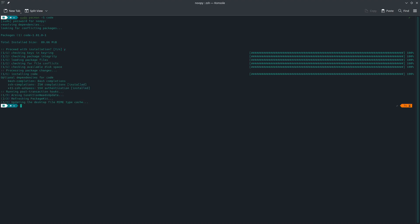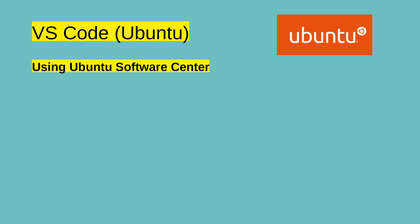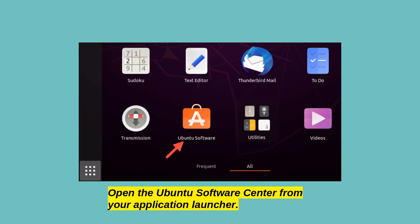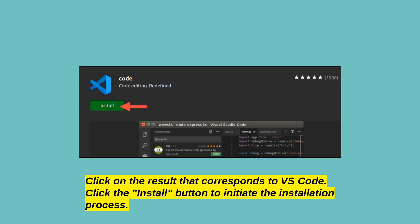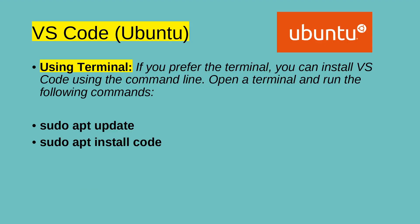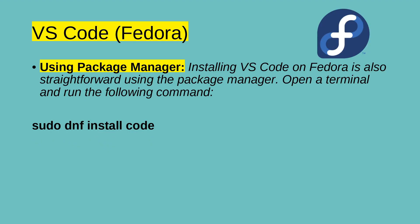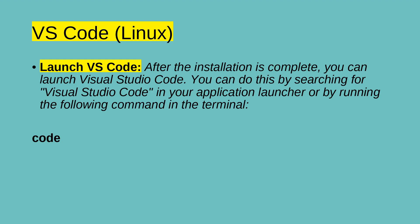Using the Ubuntu Software Center, the easiest way to install VS Code on Ubuntu is through the Ubuntu Software Center. Open the Ubuntu Software Center from your application launcher, search for Visual Studio Code, click on the result that corresponds to VS Code, click the Install button to initiate the installation, and enter your administrative password when prompted. If you prefer the terminal, open a terminal and run the following commands — this will update the package repository and then install VS Code. Installing VS Code on Fedora is also straightforward using the package manager. Open a terminal and run the following command, which will install VS Code from the official Fedora repositories. After the installation is complete, you can launch Visual Studio Code by searching in your application launcher or by running the relevant command in the terminal.